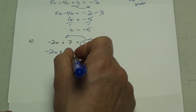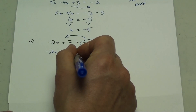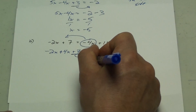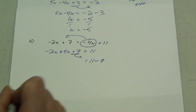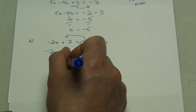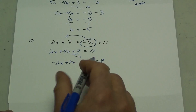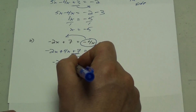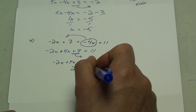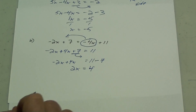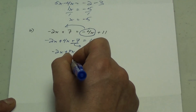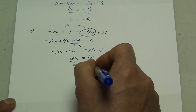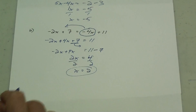The next thing I want to move is this plus 7 — get it away from the x's. It's a plus 7; when it moves across, it'll turn into its opposite, which is minus 7. So I solve my negative 2x plus 4x equals 11 minus 7. Negative 2x plus 4x is just positive 2x equals 4. 11 minus 7 is 4. Divide both sides by 2 to get the x by itself. x equals 4 divided by 2, which is 2. And there's my answer.